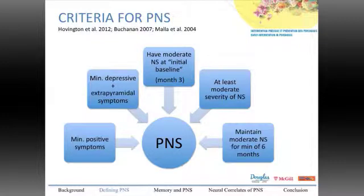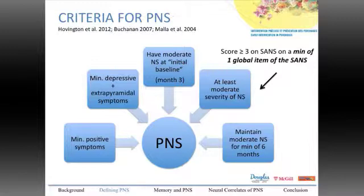Therefore, our first study focused on comparing different definitions in the literature and arrived at what we consider a good definition for persistent negative symptoms. It was defined as having minimal positive symptoms, minimal depressive and extrapyramidal symptoms, and at least moderate severity of negative symptoms — specifically a score of three or more on a minimum of one global item of the SANS.